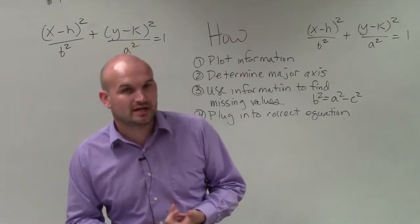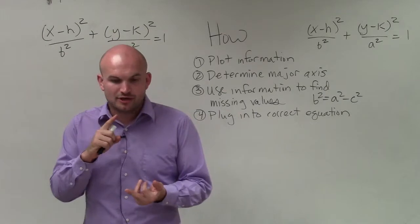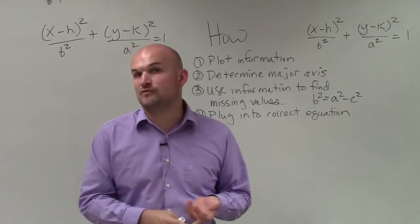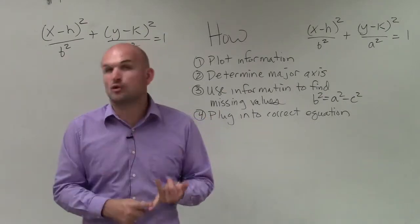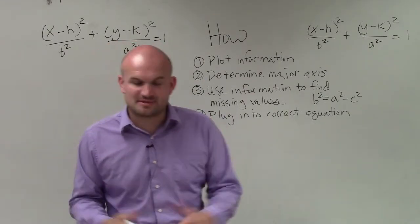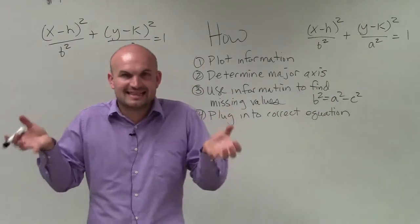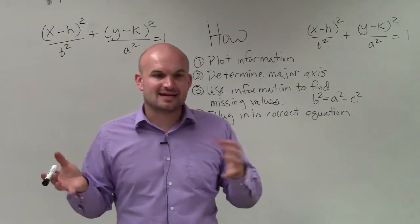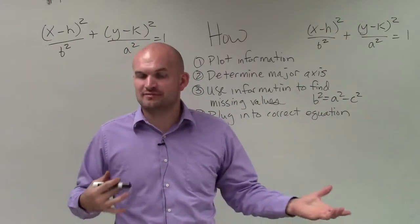Either we'll be given the coordinates of the center, the coordinates of one or both vertices, co-vertices, or the foci, or maybe even just given a point or the eccentricity of the ellipse. And what we need to do is take that information and assemble it so that we can write the equation of the ellipse.